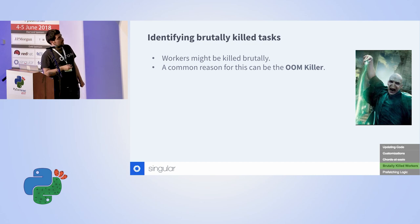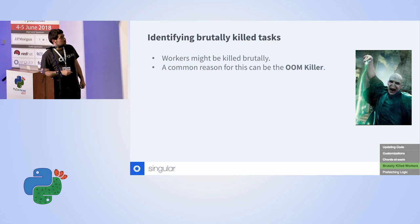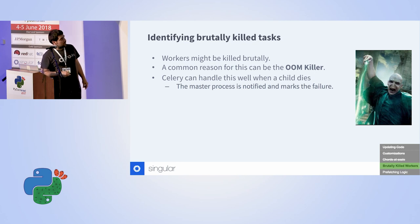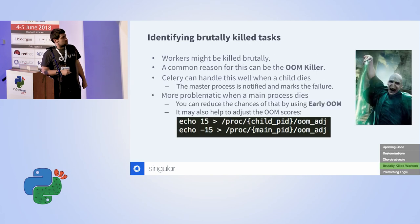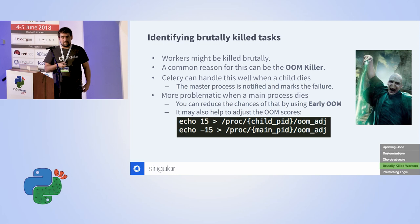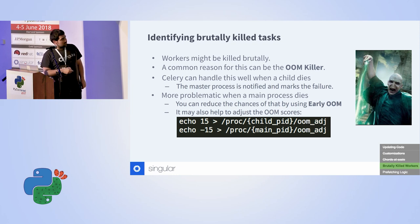Workers can be killed brutally, specifically if they take an unknown amount of memory. More specifically, in a Linux environment they can be killed by the out-of-memory (OOM) killer. When a child process — the process that actually runs the task — dies, the master process is notified and marks the failure. But it's more problematic when the main process dies. The OOM killer is called when all hope is lost, and it has some logic to decide which process will die, not necessarily the one with the highest memory. To avoid this, there's something called early OOM which triggers when memory drops below a threshold like 10%, and you can optimize it by defining a higher kill score for child processes than main processes.